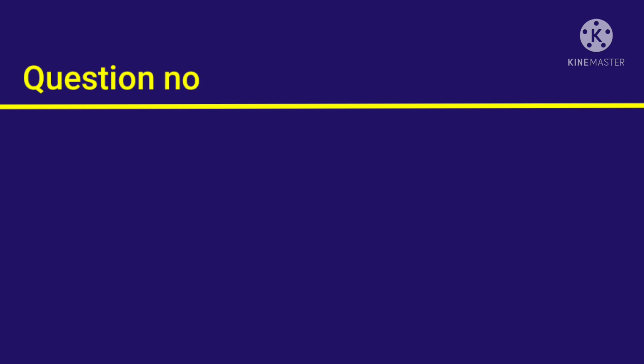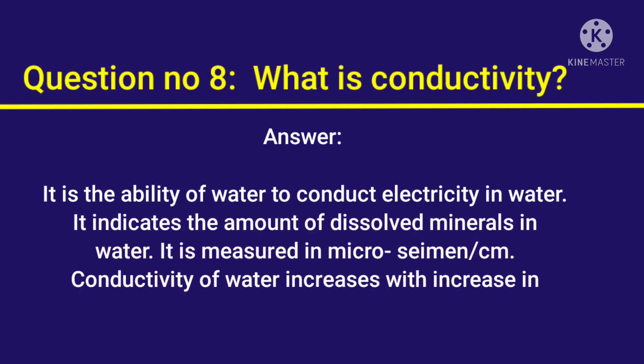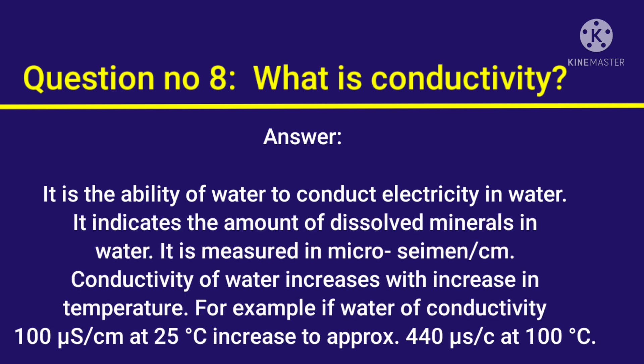Question number 8: What is conductivity? Answer: It is the ability of water to conduct electricity. It indicates the amount of dissolved minerals in water. It is measured in microsiemens per centimetre. Conductivity of water increases with increase in temperature — for example, water of conductivity 100 microsiemens per centimetre at 25°C increases to approximately 440 microsiemens per centimetre at 100°C.